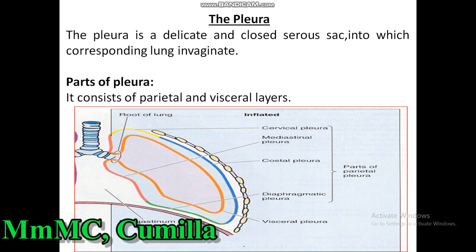Some questions may come from the pleura. The pleura is a delicate closed serous sac into which the corresponding lung invaginates. It consists of parietal and visceral pleura. Parietal pleura covers the body wall and visceral pleura invests the entire lung. The parts of the parietal pleura are: cervical pleura, which covers the apex of the lung; costal pleura, which covers the costal surface; diaphragmatic pleura, which covers the diaphragmatic surface; and mediastinal pleura, which covers the mediastinal surface of the lung.